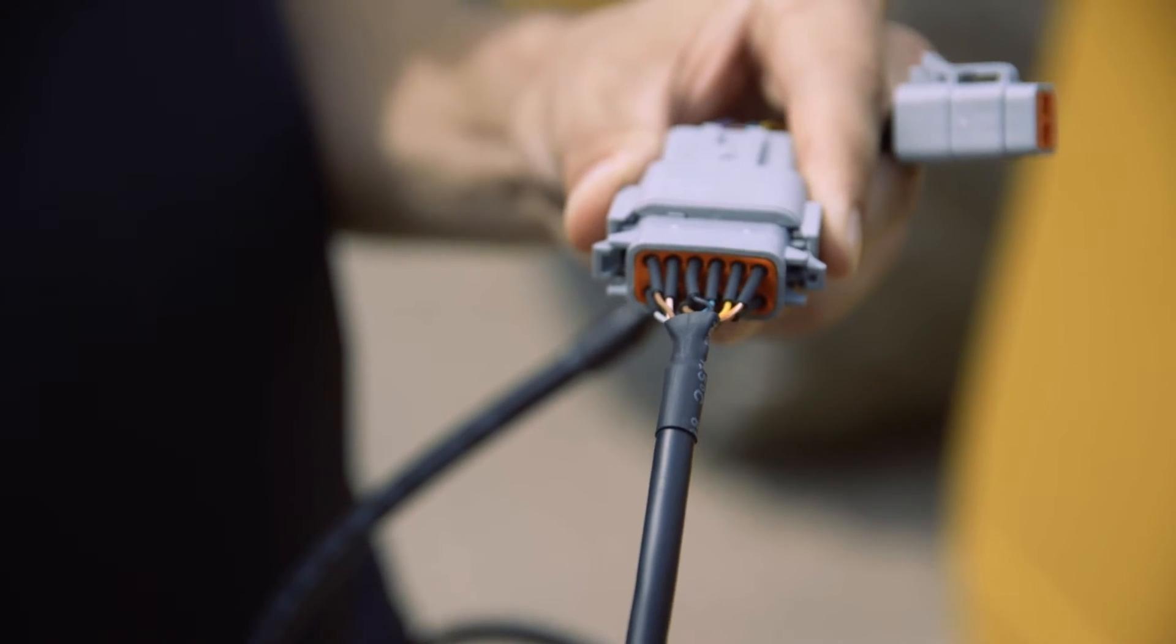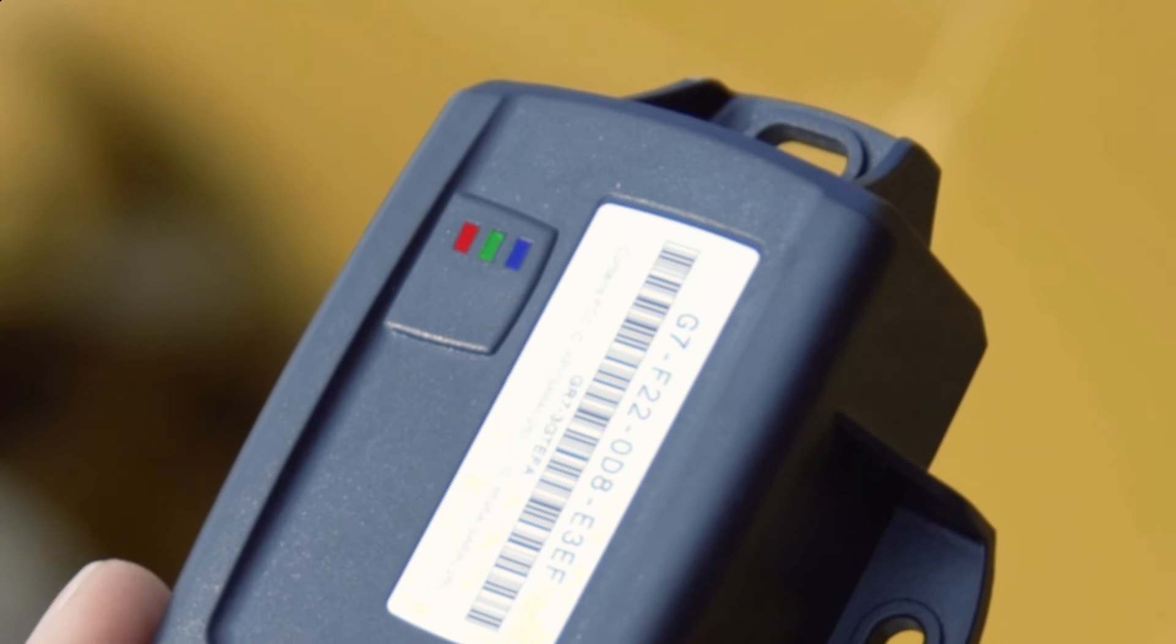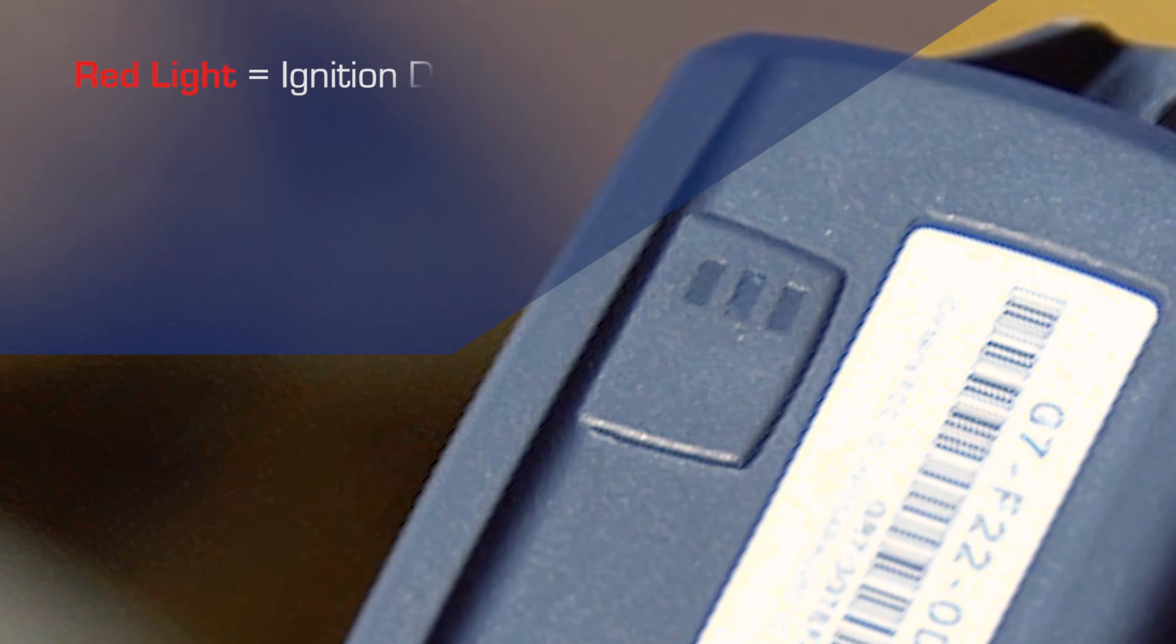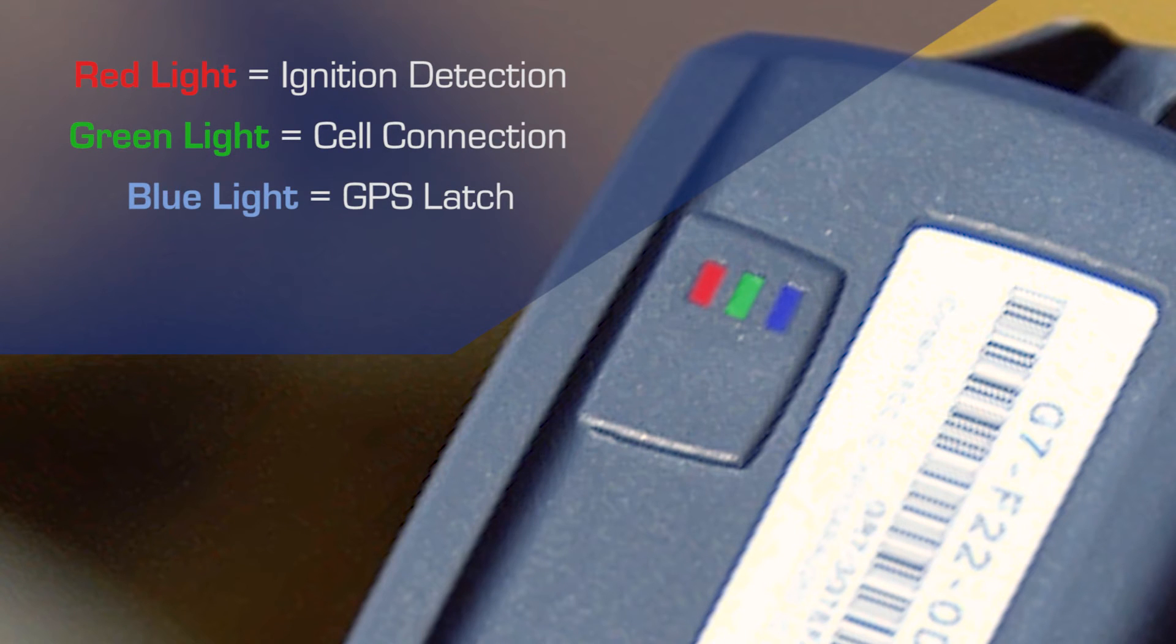You will hear 6 beeps and all 3 LEDs on the device will flash briefly. Turn on the ignition. The device will beep as each one of the LEDs lights up. Red indicates ignition detection, green indicates cell connection, and blue indicates GPS latch.